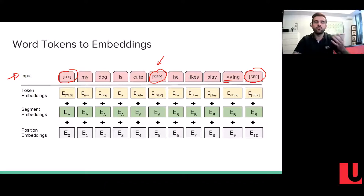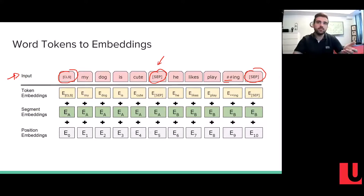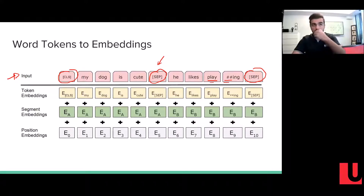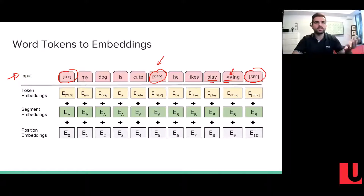BERT uses pre-trained embeddings. As mentioned in the paper, they use WordPiece embeddings with a vocabulary of 30,000 tokens. BERT's vocabulary is fixed at 30,000 tokens. For example, 'play' is part of their vocabulary, but 'ING' is shown with a special symbol. The tokenizer decides whether to keep every word as a whole word or split it into subwords, with a special representation for the first subword and subsequent subwords. That covers token embeddings.